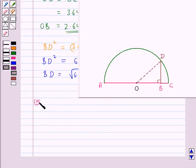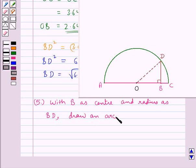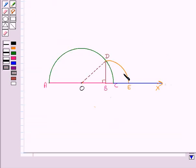Now our next step is with B as the center and radius as BD we draw an arc. This is the arc drawn with B as the center and radius equal to BD which is square root of 6.28 and it meets AC produced at point E.